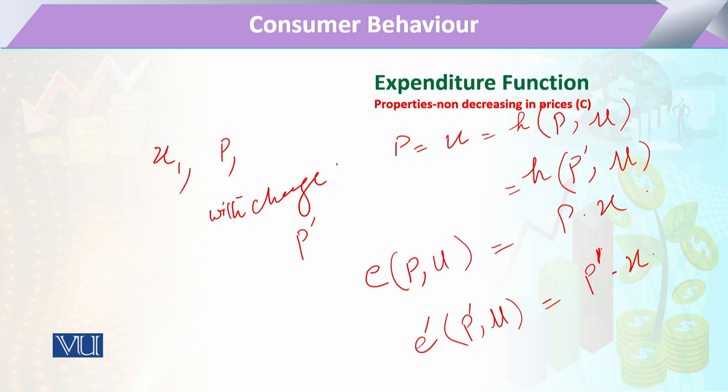Agar chunke yahan pe kaha ke p prime is greater than p, so definitely its product will be higher. So its product will be either equal or we can say agar minimum hai to higher equal to the previous point.